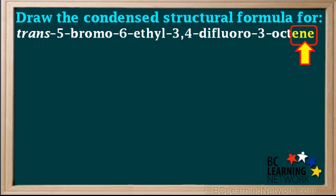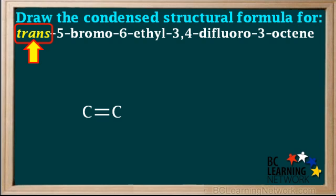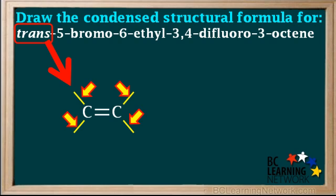Because the name ends in the letters E-N-E, we know the compound is an alkene with one carbon-carbon double bond. We can show two carbon atoms with a double bond between them. Because the trans-isomer is specified, we must show how the groups are distributed around these two carbon atoms. We add two single bonds coming from each carbon atom. Each carbon atom now has four bonds, which should always be the case.